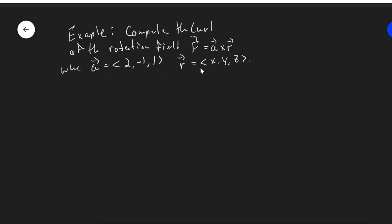So here we'll use the general rotation fields that we looked at in the last video. Here where a is 2, negative 1, 1, and r is x, y, z. Of course, r is always x, y, z in this case. So let's actually compute this curl.